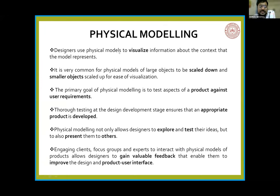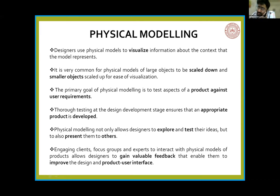The first thing is that designers use physical models to visualize information about the context the model represents. Visualization is very important for a product designer. First you must visualize what exactly it is. After that, we must model it — scale down larger objects and scale up smaller objects. The primary goal of physical modeling is to test the aspect of a product against user requirements. We can do a small testing, get feedback, and after feedback we can easily evaluate — because prototyping does not cost much. We can easily assemble cardboard, paper, anything — and the user gets an idea of what exactly you have done.